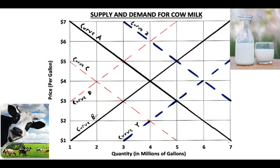The purpose of this video is to help you understand how the supply and demand curves work together, how they interact, and how the equilibrium price changes as one or the other shifts, as well as how government controls can affect your equilibrium price. What we have on the screen is the supply and demand for milk — more specifically, traditional milk from a cow.